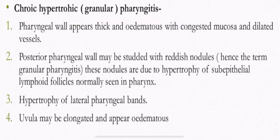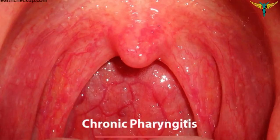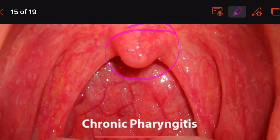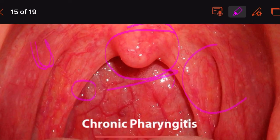In granular pharyngitis there is also hypertrophy of the lateral pharyngeal bands, similar to the catarrhal type. The uvula may be elongated and appear edematous. Normally the uvula is small and tiny, but here it becomes edematous and hypertrophied — increased in cell size.